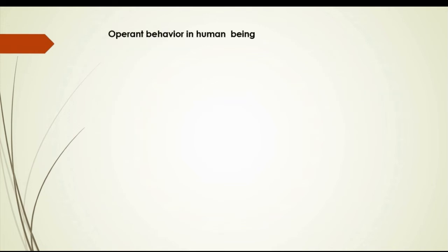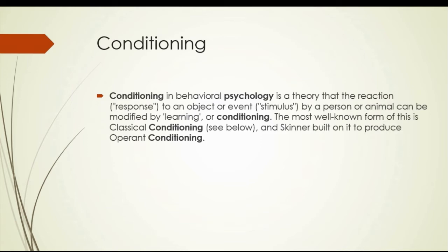Whenever behavior is correlated to a specific eliciting stimulus, it is respondent behavior. Whenever no such stimulus is present, it is called operant behavior. There are two types of conditioning: S-type conditioning, which applies to respondent behavior, and R-type conditioning, which applies to operant behavior. In operant conditioning, the response comes first and then it is reinforced. In operant behavior, behavior occurs without any observable external stimulus — the organism's response is spontaneous. Another difference is that operant behavior operates on the organism's environment, while respondent behavior does not.